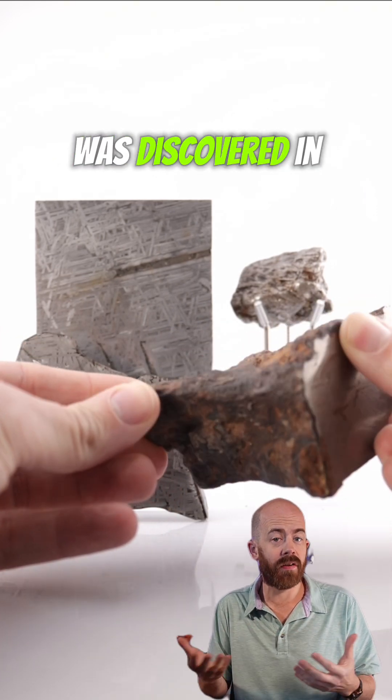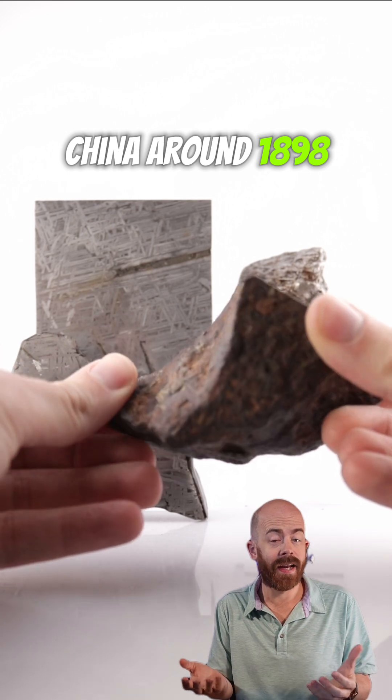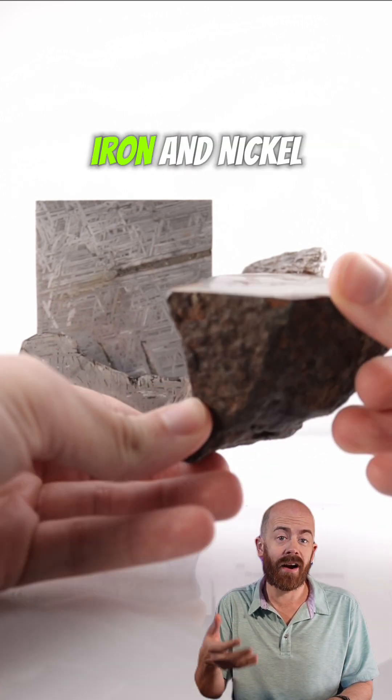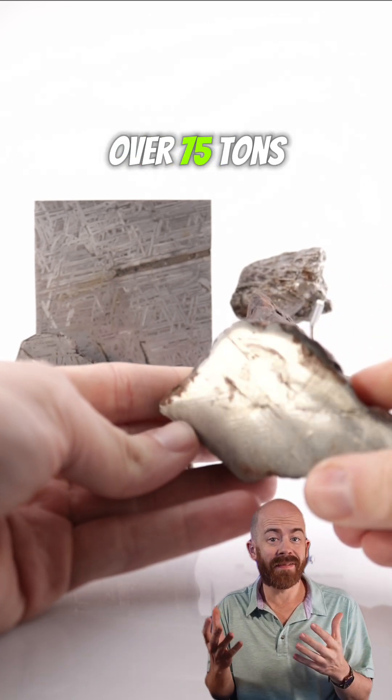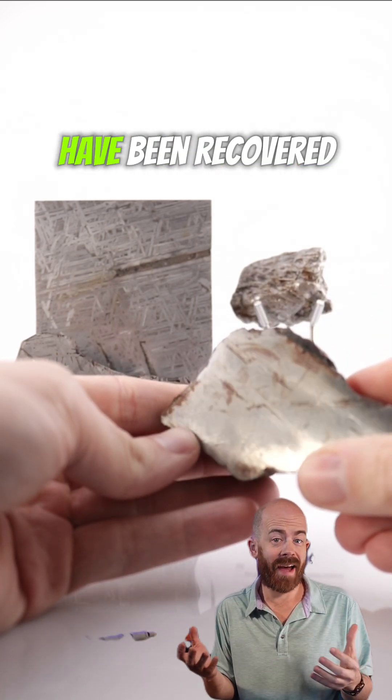This meteorite was discovered in China around 1898. It landed a lot earlier than that, but because it's primarily iron and nickel, it survived for quite a long time. So far, over 75 tons of this meteorite have been recovered.